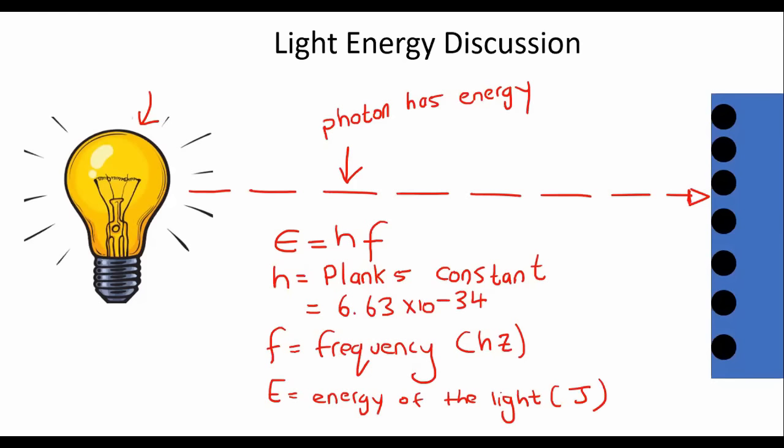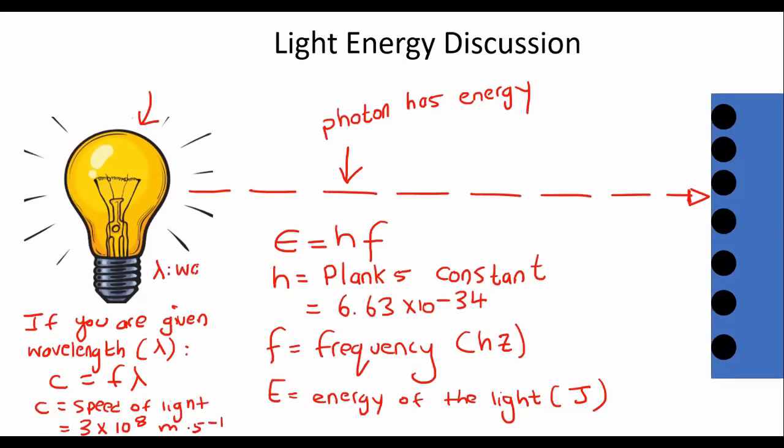Now, sometimes they're not going to give you the frequency. Sometimes they're going to give you the wavelength. So if you are given wavelength, which some people like to call it Lambda, then you're rather going to use this formula. C is equal to F Lambda, where C is the speed of light in air, which is always equal to 3 times 10 to the 8 meters per second. And then Lambda is the wavelength. And that is measured in meters.